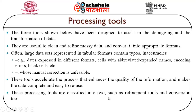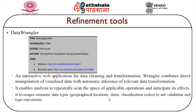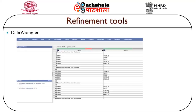These tools accelerate processing that enhances the quality of information and makes data complete and easy to reuse. Processing tools are classified into refinement tools and conversion tools. Data Wrangler is an interactive web application for data cleaning and transformation. Wrangler combines direct manipulation of visualized data with automatic inference of relevant data transformations, enabling analysts to repeatedly scan applicable operations and anticipate their effects. It leverages semantic data types — geographical locations, dates, classification codes — to aid validation and type conversion.